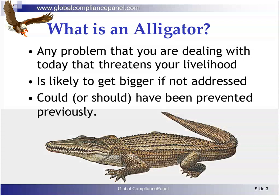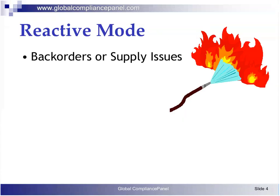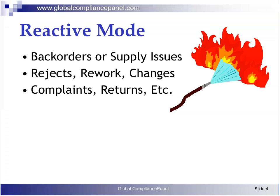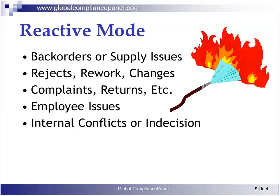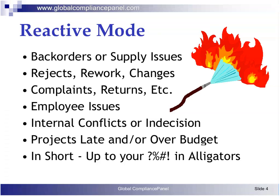Eagles are the exact opposite of alligators. They're any project, policy, or initiative that captures market share, devours the competition, and soars to great heights and profits our careers. In most cases, we're in a reactive mode, and you have to think of problems as downstream symptoms. Back orders and supply issues are only downstream symptoms of the decisions we made when we selected our supply channels or the assumptions and methods of preparing for our market demand.